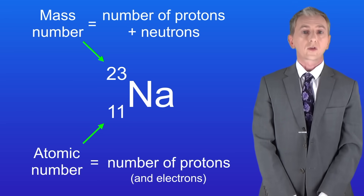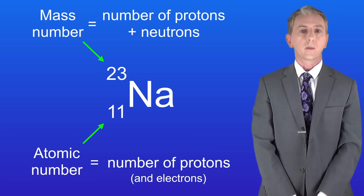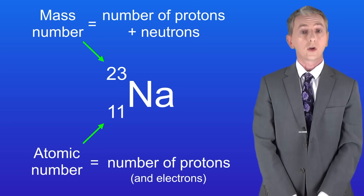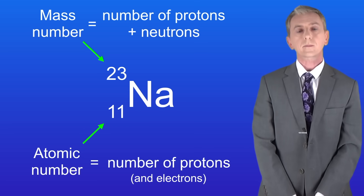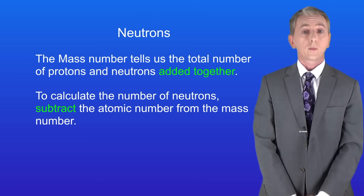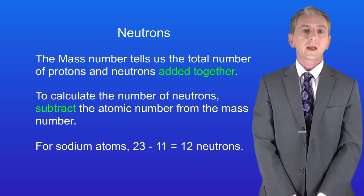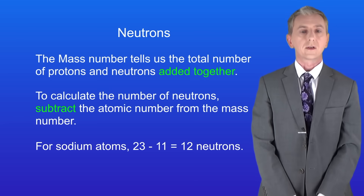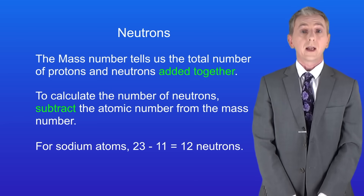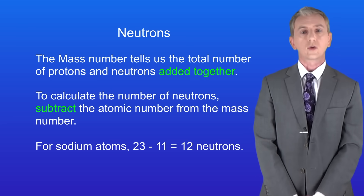The larger number is called the mass number. This tells us the total number of protons and neutrons added together. To calculate the number of neutrons we subtract the atomic number from the mass number. So in the case of sodium the mass number is 23. Subtracting 11 from 23 tells us that sodium atoms have got 12 neutrons.